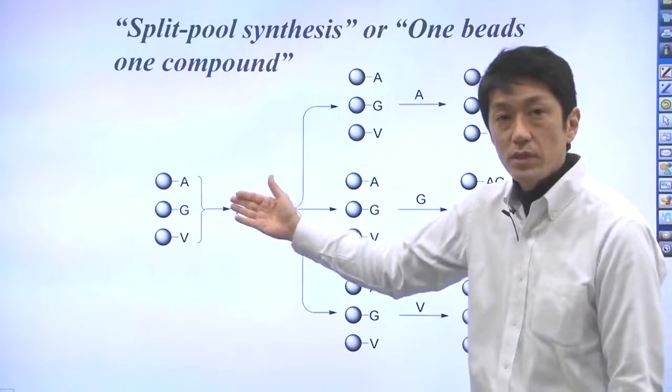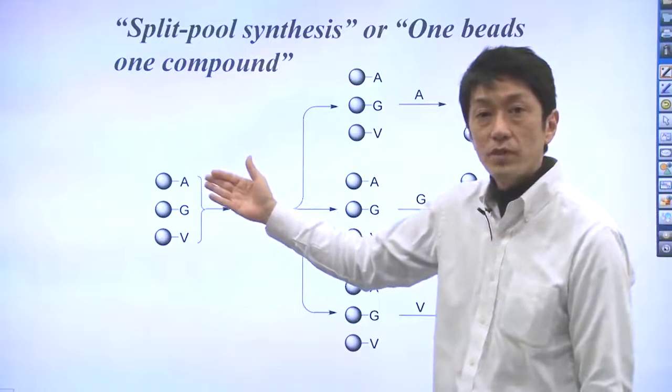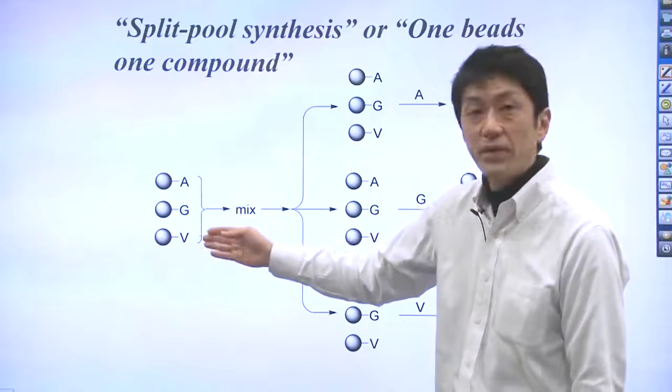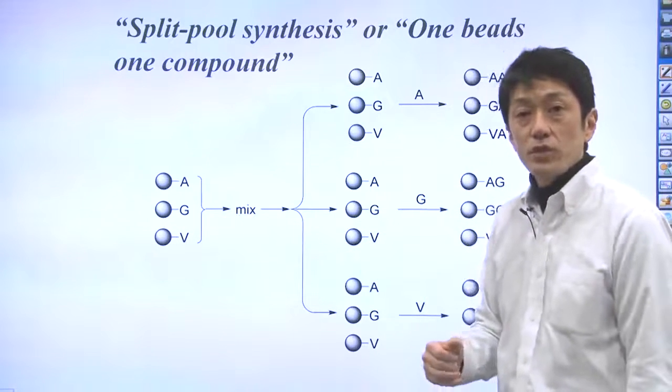These beads in the tube are allowed to react with amino acids A, G, V respectively. Effectively, when the reaction is complete,